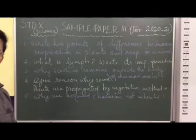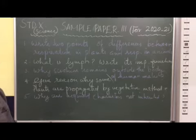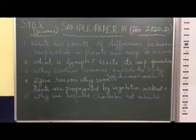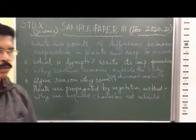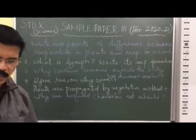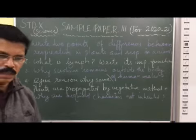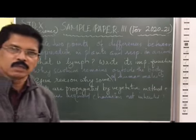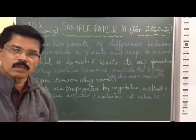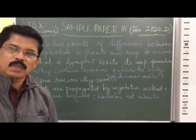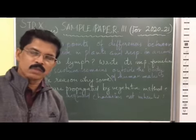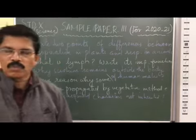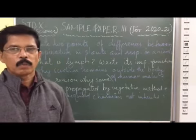Fourth question - give reason why some plants are propagated by vegetative method. Some plants like sugarcane, pineapple, rose, hibiscus and many other types of plants do not produce viable seeds through sexual reproduction. Though sexual reproduction takes place in them, they do not form viable seeds. So such plants which do not produce viable seeds through sexual reproduction are propagated by vegetative methods.